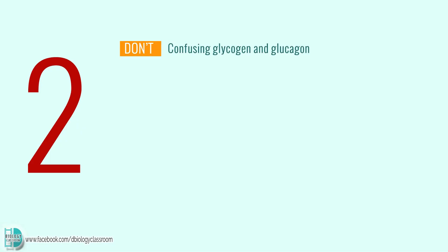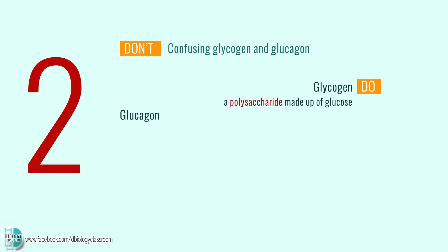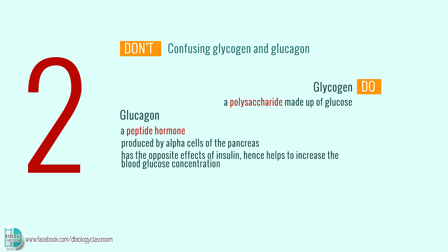Number 2: Confusing glycogen and glucagon. Glycogen is a polysaccharide made up of glucose, while glucagon is a peptide hormone produced by alpha cells of the pancreas. It has the opposite effects of insulin, hence helps to increase the blood glucose concentration.